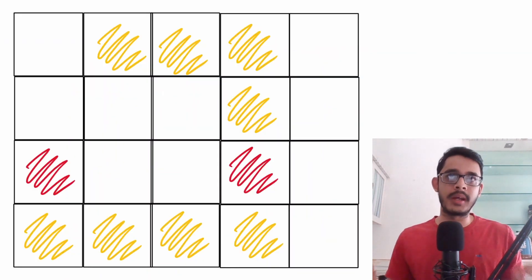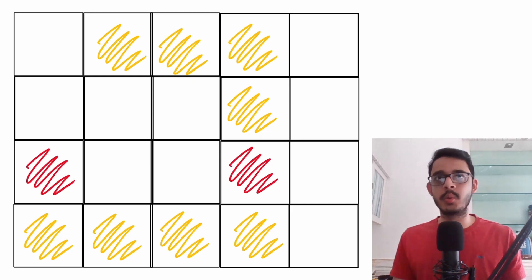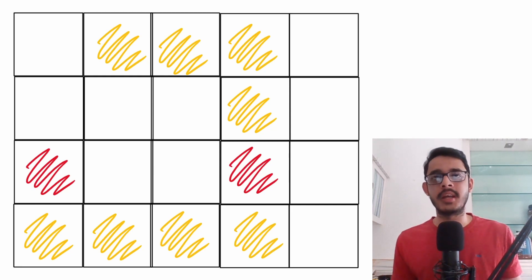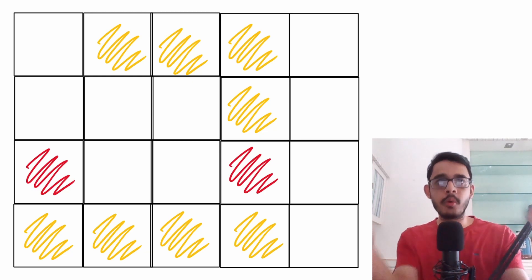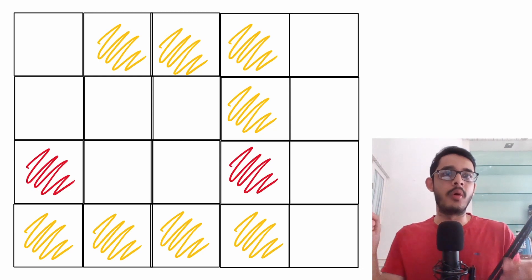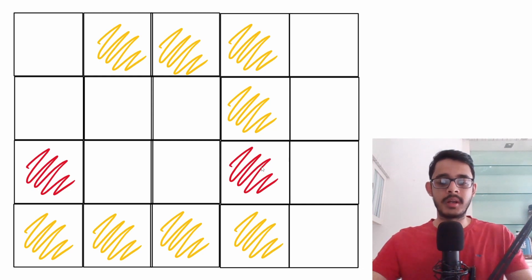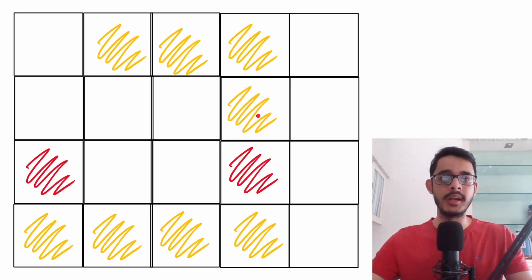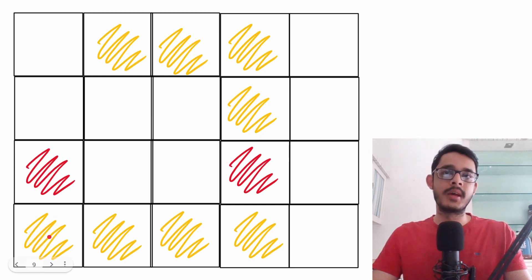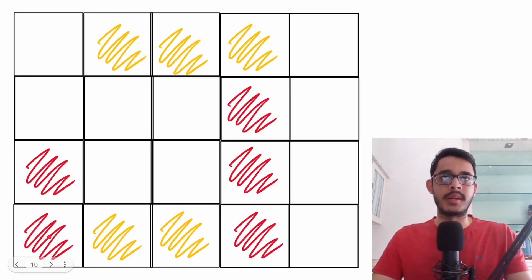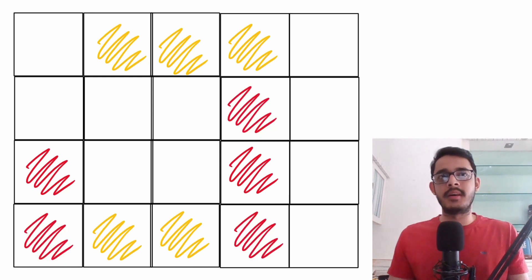Let's look at the problem setup. Say these two red pieces are rotten oranges and all the yellow pieces are fresh oranges. In the next iteration, the rotten orange spreads in all four directions and spoils the adjacent fresh oranges. We start with two rotten oranges, so both spread simultaneously.